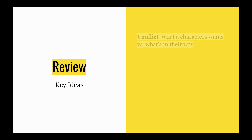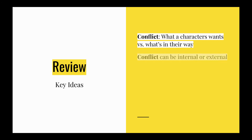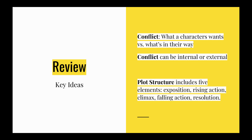To quickly review: conflict is what a character wants versus what's in their way — two opposing forces. There are two major types of conflict: one is internal, inside the character, or two is external, outside of the character. And plot structure includes five elements: exposition, rising action, climax, falling action, and resolution.